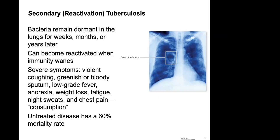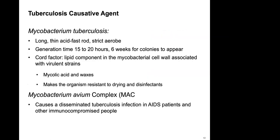Severe TB symptoms include violent coughing, greenish or bloody sputum, low-grade fever, anorexia, weight loss, fatigue, night sweats, and chest pain — collectively referred to as 'consumption.' Untreated disease has a 60% mortality rate. TB is caused by Mycobacterium tuberculosis, a long thin acid-fast rod detected using an acid-fast stain on sputum.